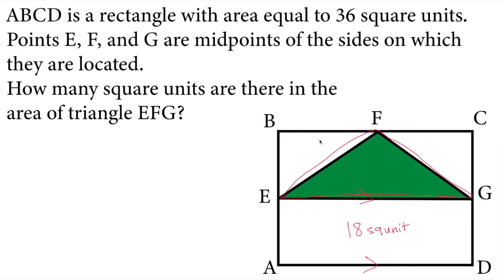We are trying to find this green area, and we have a special rule with parallelograms. The rule is: the area of the triangle formed by connecting two points on the base and one point on the top side — or upper base — is half of the area of the parallelogram.